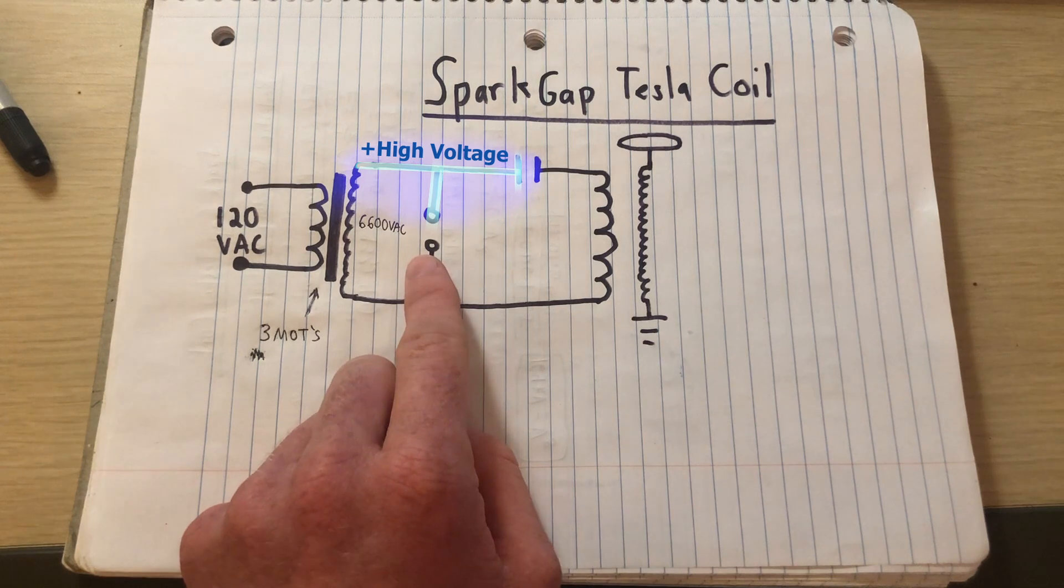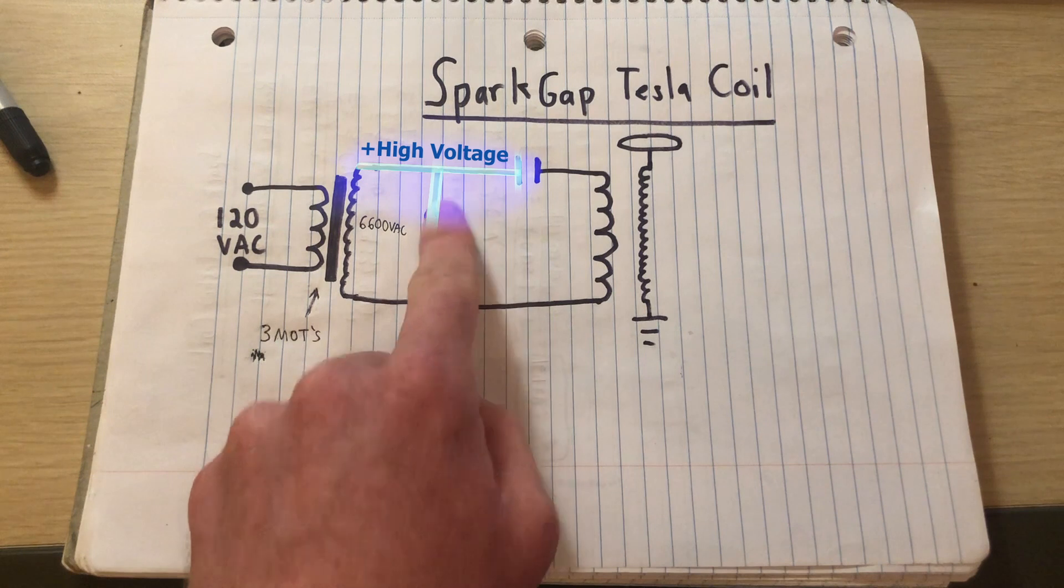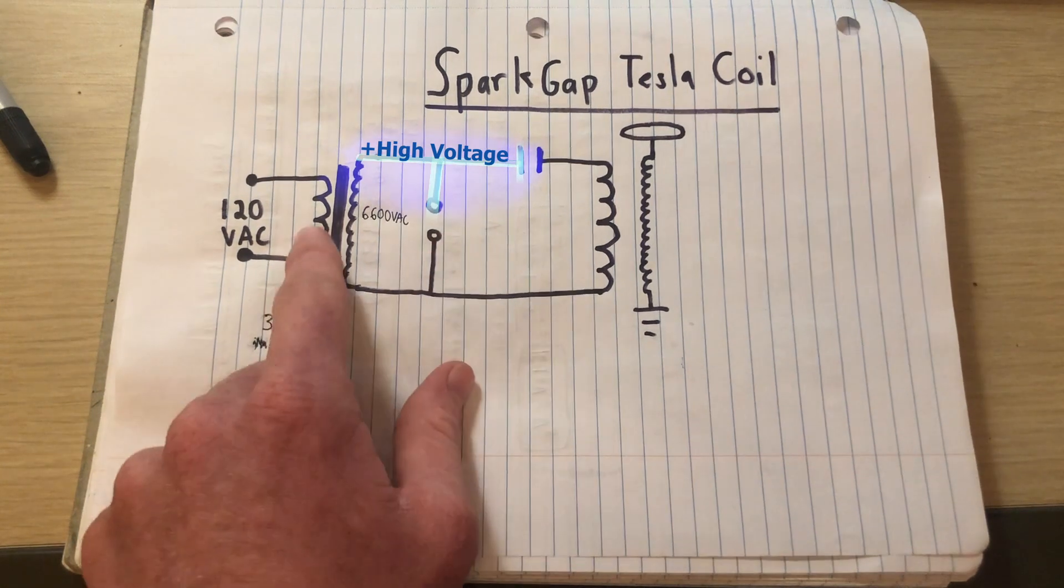The spark gap's breakdown voltage depends on the distance between its terminals, and ideally you would match this breakdown voltage with the peak voltage of the power supply.